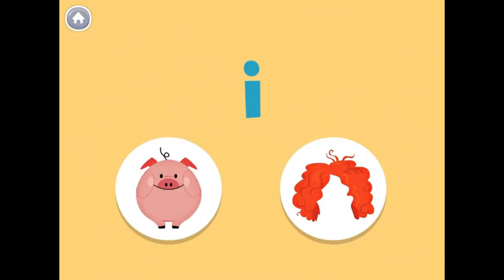This is the letter I, which makes the 'E' sound. The words pig and wig have the 'E' sound in the middle. Can you hear the 'E' in pig?